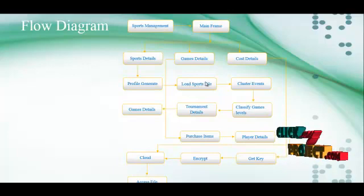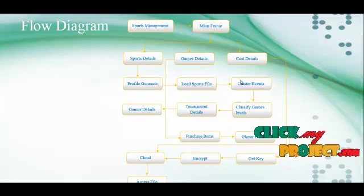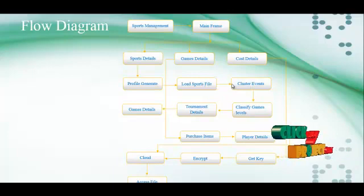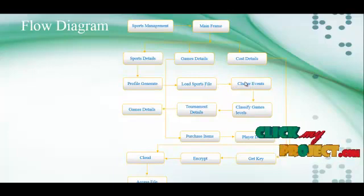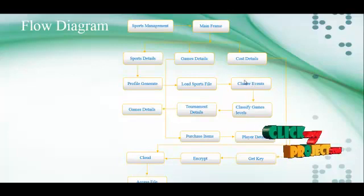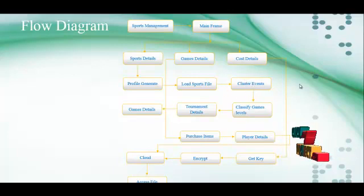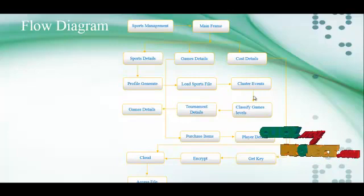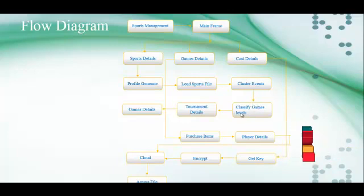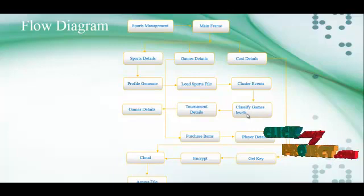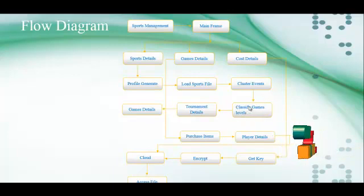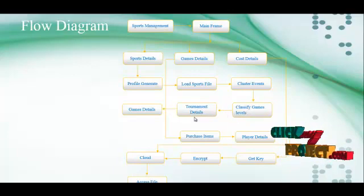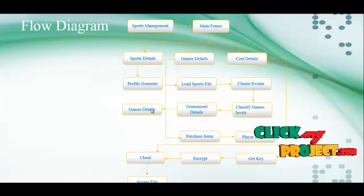After profile generation, users present different data in the sports management system. The system loads files into the database, then the data is going to be clustered — called clustered events — grouping the data browsing events. After that, we classify the game levels, for example football or basketball. Different game levels are classified to get tournament details and game details.